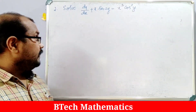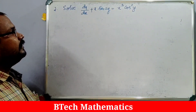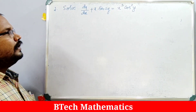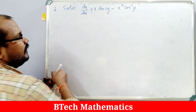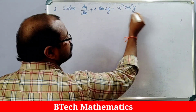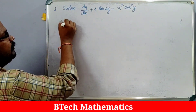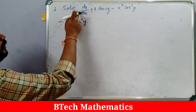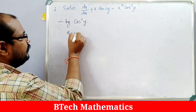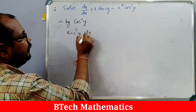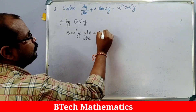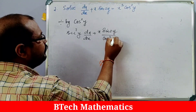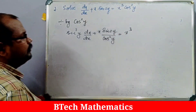Next question: solve dy/dx + x·sin2y = x³·cos²y. To reduce this to linear form, we divide throughout by cos²y. Dividing gives: (1/cos²y)·(dy/dx) + x·sin2y/cos²y = x³.